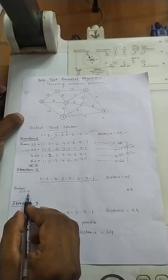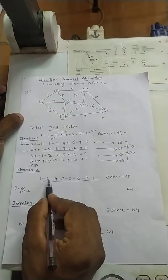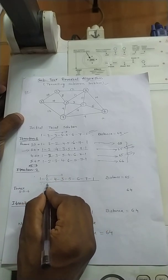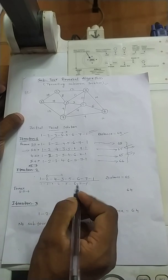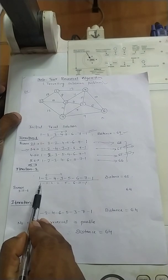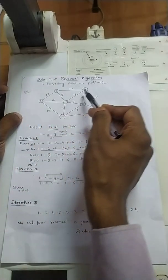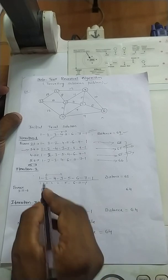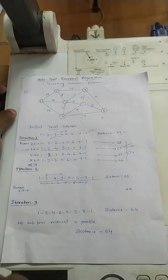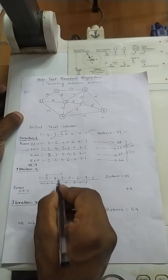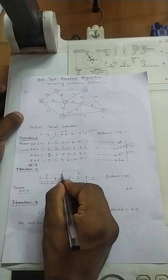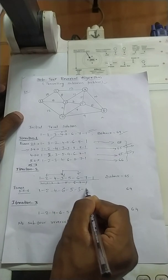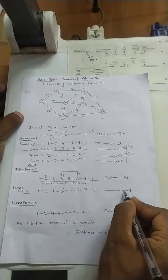In iteration 2, three cities are reversed at a time. Reversing 2, 4, 3 gives 1, 3, 4, 2, 5, 6, 7, 1, but there is no path from 2 to 5, so this is invalid. The only valid combination is reversing 3, 5, 6 — giving path 1, 2, 4, 6, 5, 3, 7, 1. The distance for this path is 64.